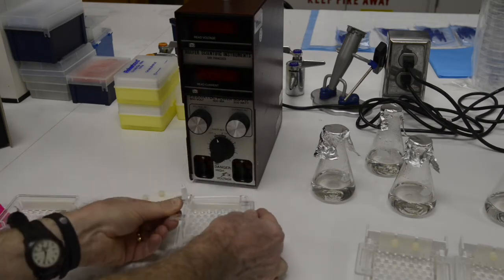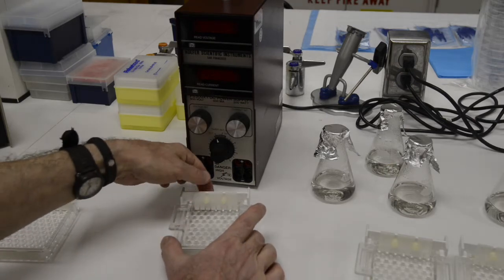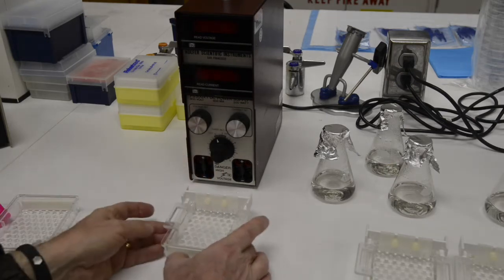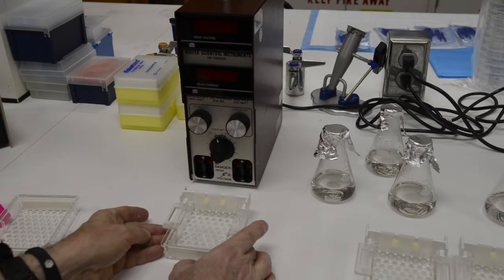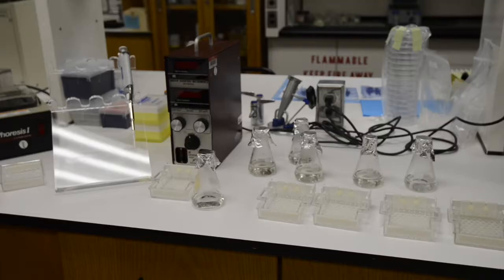So you're going to assemble a casting tray as I'm showing here. An eight-well comb goes into that casting tray and then you'll be preparing a 1% agarose solution to actually cast the gel.